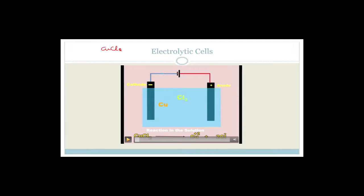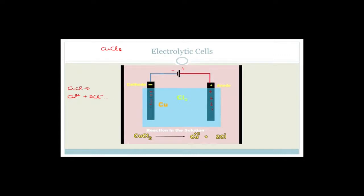The long side is positive and the short side is negative. That makes this electrode the negative side because it is connected to the negative end of the battery, and this is the positive side because it's connected to the positive end. So this electrode is negatively charged and this electrode is positively charged. Now, CuCl₂ breaks up into Cu²⁺ plus 2Cl⁻.